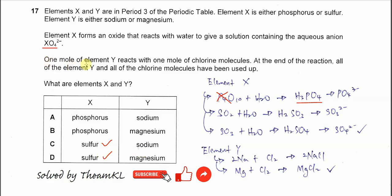Now one mole of element Y reacts with one mole of chlorine molecules. At the end of reaction all the elements Y and all the chlorine molecules have been used up.